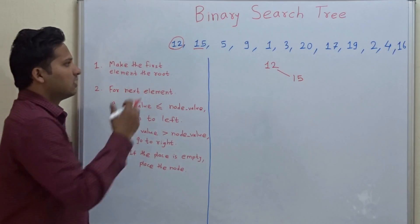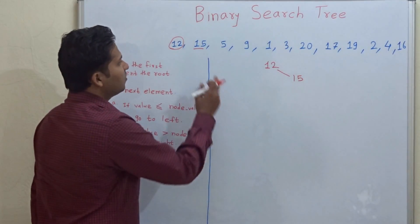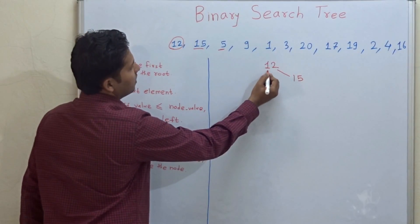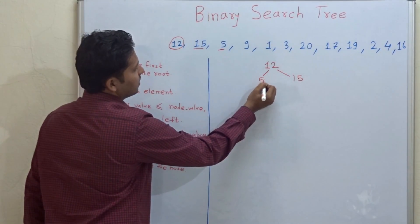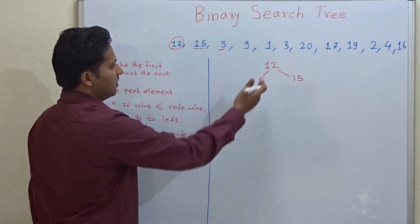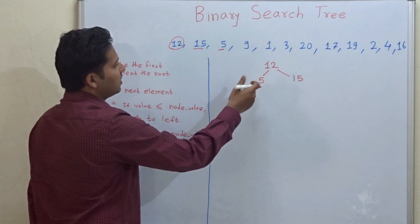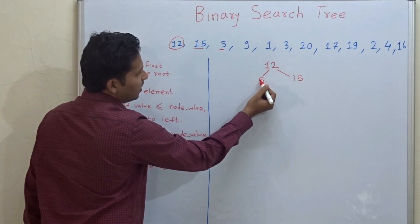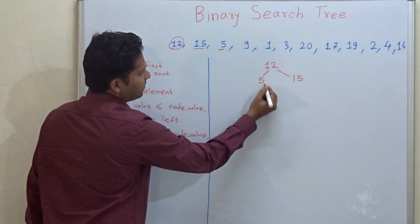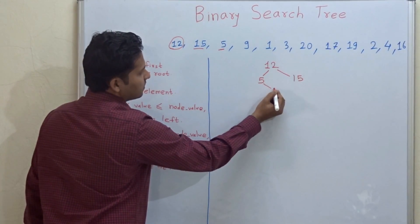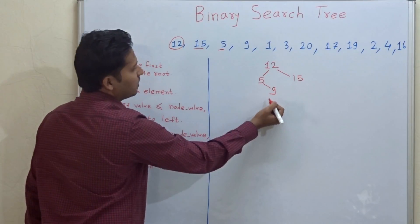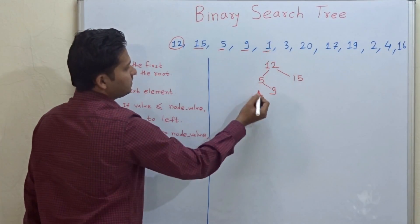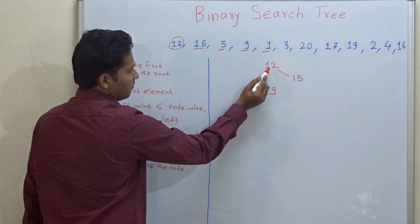The next node is 5. 5 is less than 12, so we attach it to the left. Then 9: 9 is less than 12 but greater than 5, so we attach it to the right side of 5.